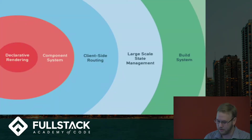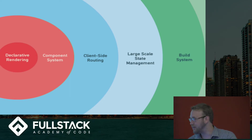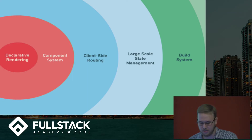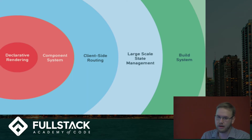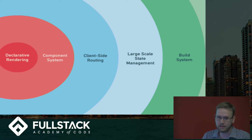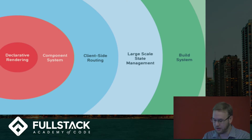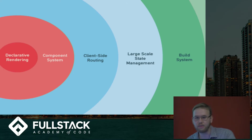For example, you have declarative rendering — if you want a small thing, there's your form. But as you get bigger and bigger, you add more things. You have a component system, like our separation of concerns in React. Then you can do things with client-side routing as your project gets bigger, and that uses something called VueRouter. And then, as you get bigger still, you get large-scale state management with VueX.